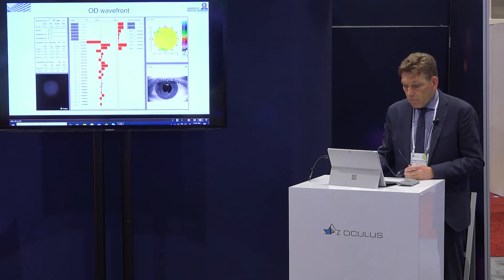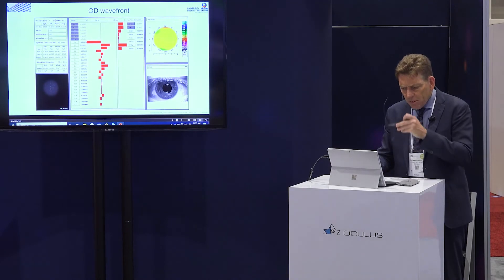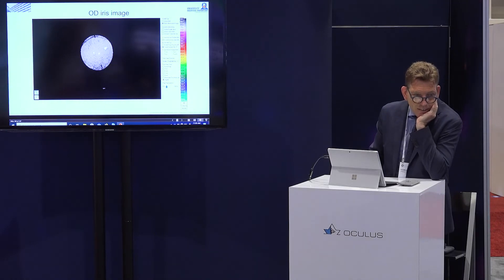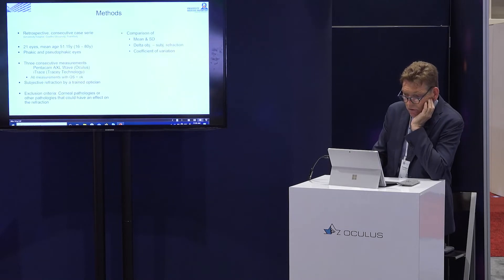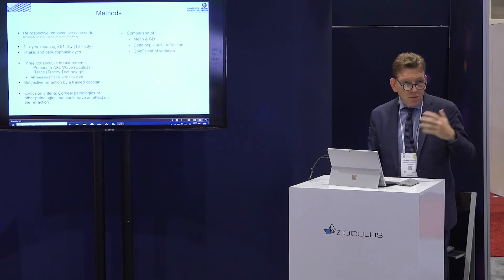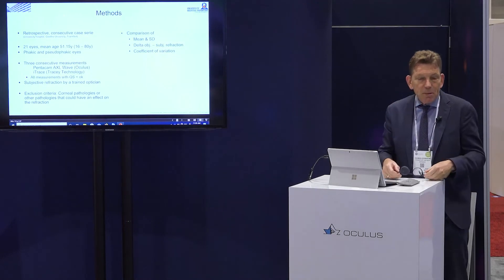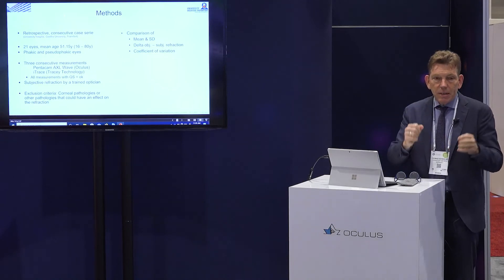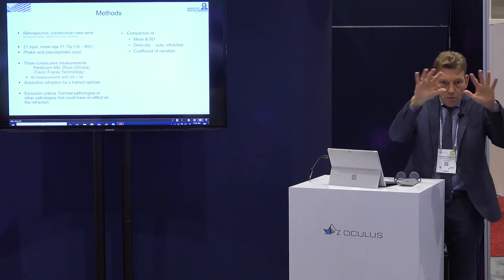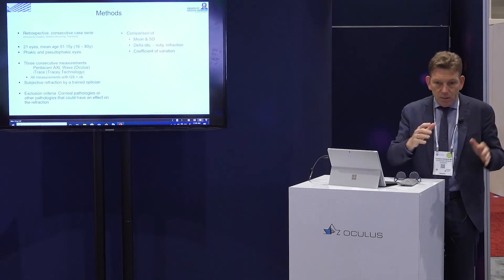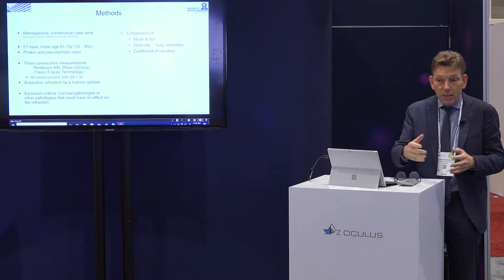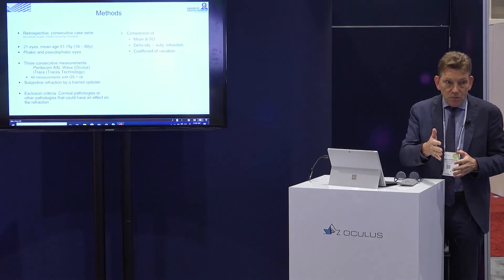Patient number two had higher order aberrations and was not happy post-surgery. We looked at the retro illumination and could clearly see a posterior capsule opacification — a secondary cataract. I performed YAG laser and the patient was happy. You can also see this at the slit lamp, but because we have it in our preoperative screening, when patients come to the clinic the first thing we do is the AXL Wave. From the 12-item display you can already see the visual axis is not clear, identify a posterior cataract, and determine whether the IOL is sitting correctly.